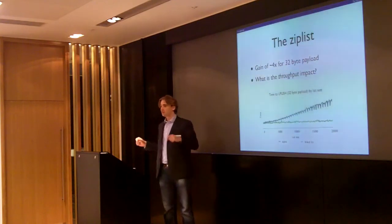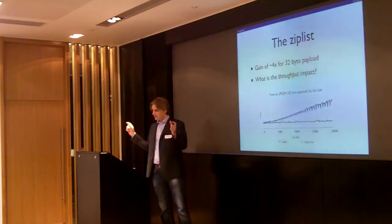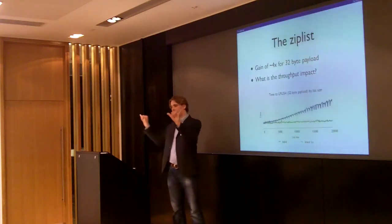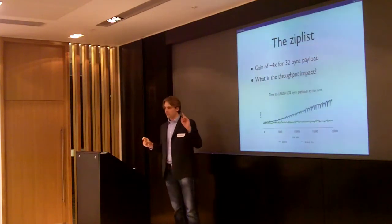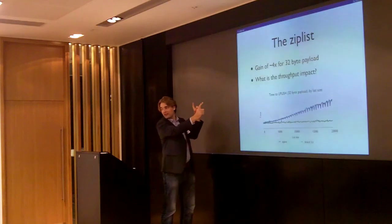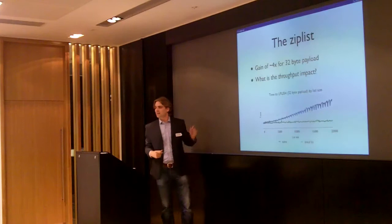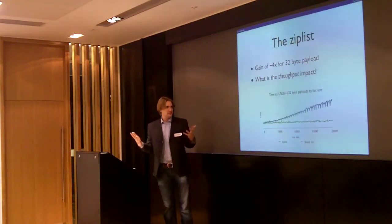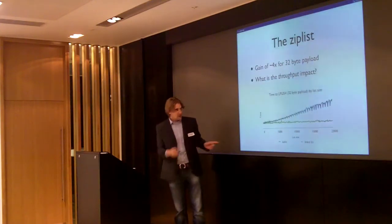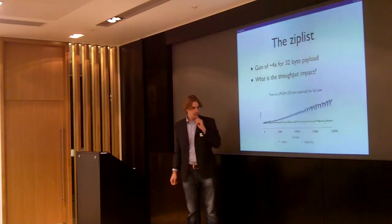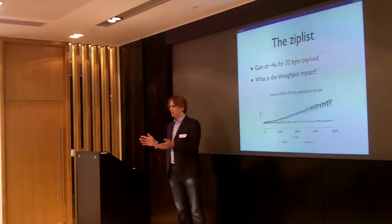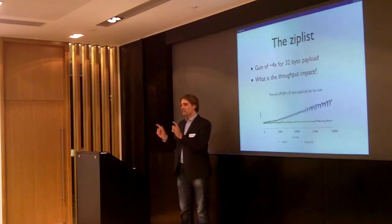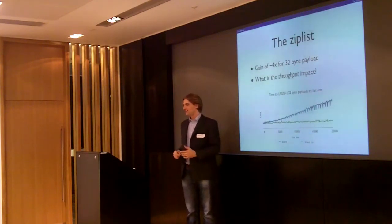Nothing comes for free, of course. Where constant-time pop and push were available with the structs, we don't have that with zip lists. Every time you do a push on the end of the list, you have to reallocate that entire block of memory. And even worse, when you do a push on the left of the list, you have to reallocate and move all the bytes of memory to the right and place the new element there. But due to things like cache locality — modern processors have two to four megabyte caches — they can perform those expensive operations in cache and they turn out to not be that expensive after all.